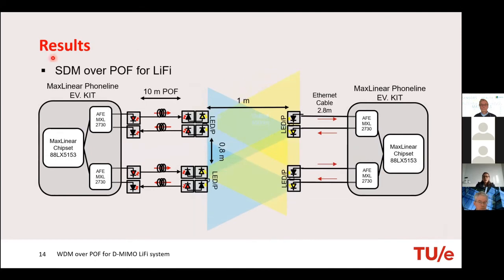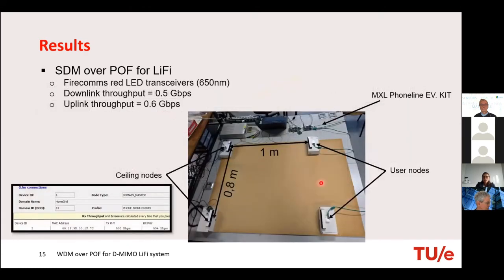Then we combined both PoF and the Li-Fi system using SDM. Here you can see the setup in the lab, with ceiling nodes and user nodes. The distance between the ceiling nodes is 0.8 meters, and between the ceiling nodes and the user nodes is 1 meter. This is our PoF transceiver and the MaxLinear evaluation kit. Here you can see the PoF feeding our ceiling nodes. For this combined case, we got 0.5 gigabits per second for downlink and 0.6 gigabits per second for uplink.